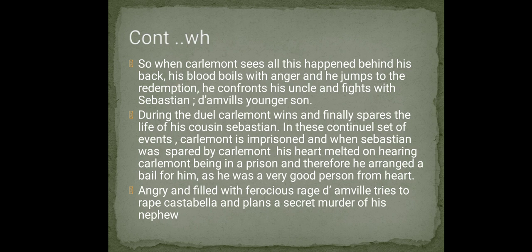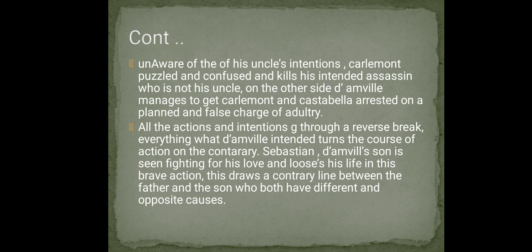Angry and filled with ferocious rage, D'Amville tries to rape Castabella and plans the murder of his nephew. Unaware of his uncle's intentions, Charlemont, puzzled and confused, kills his intended assassin — who is not his uncle. On the other side, D'Amville manages to get Charlemont and Castabella arrested on a planned and false charge of adultery.